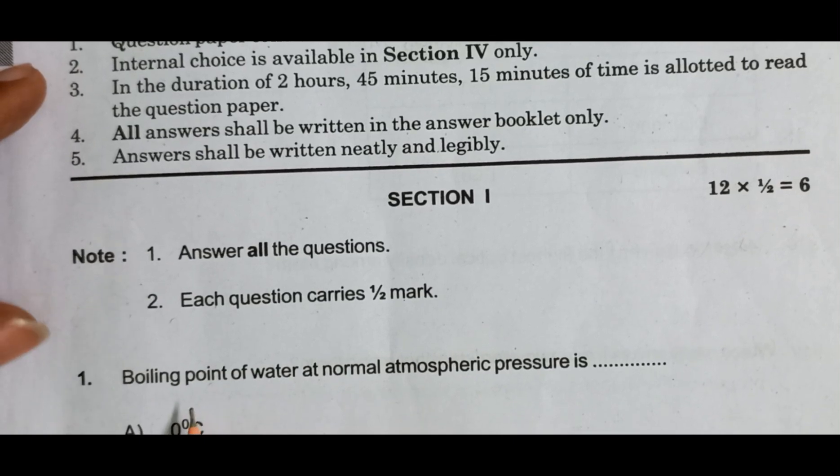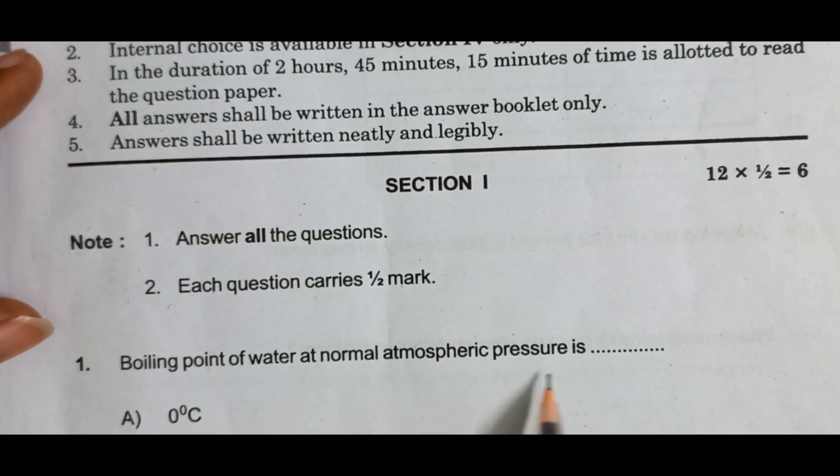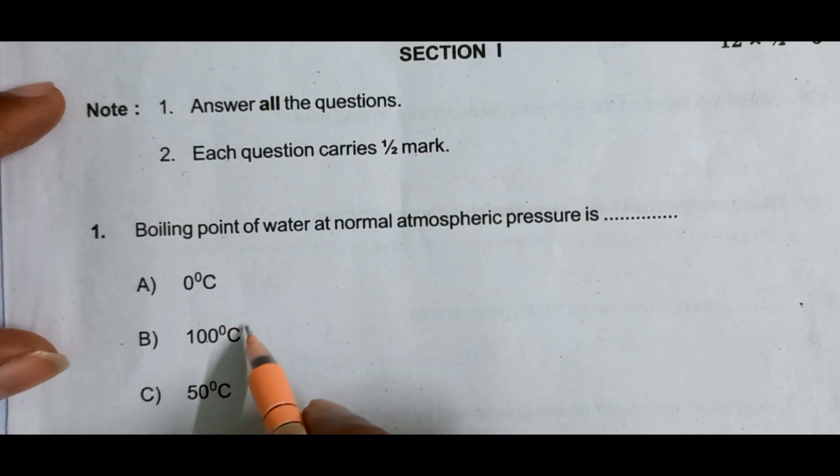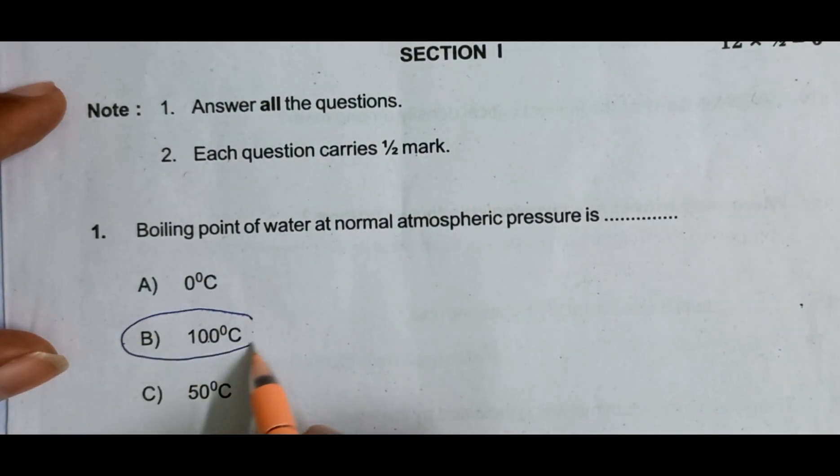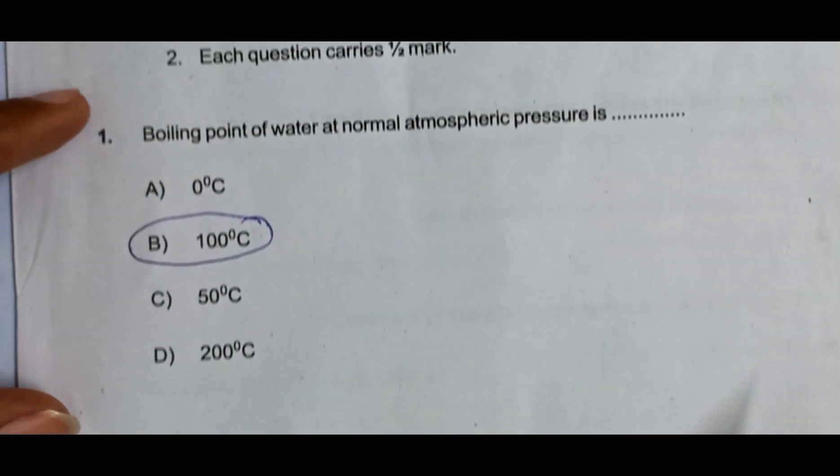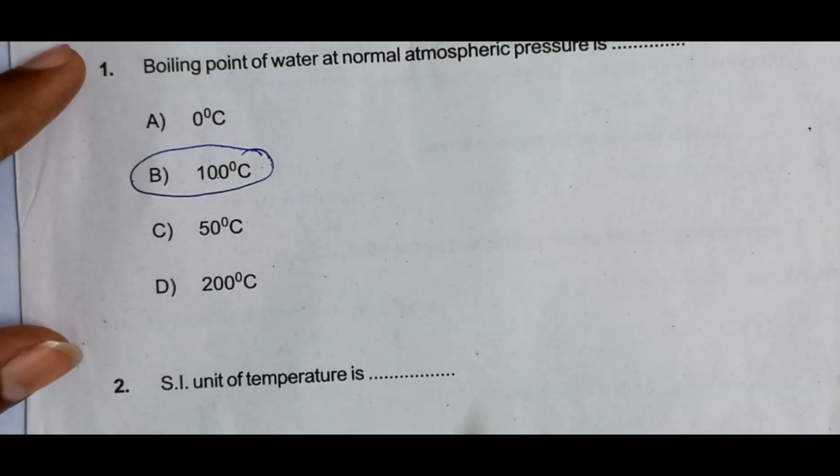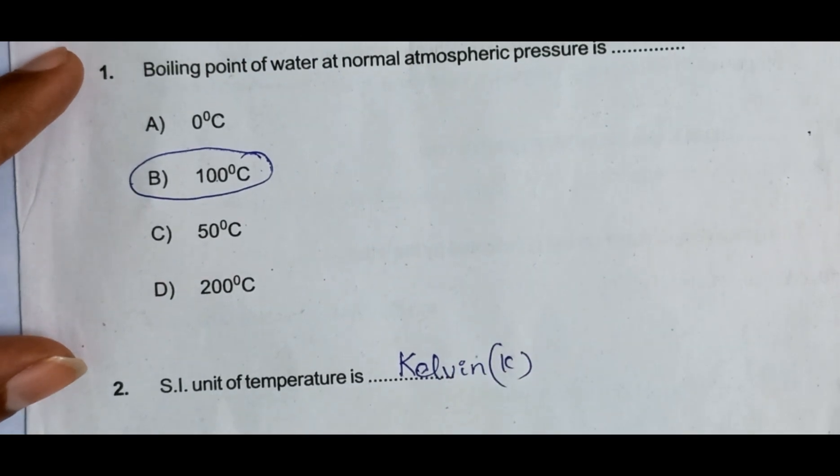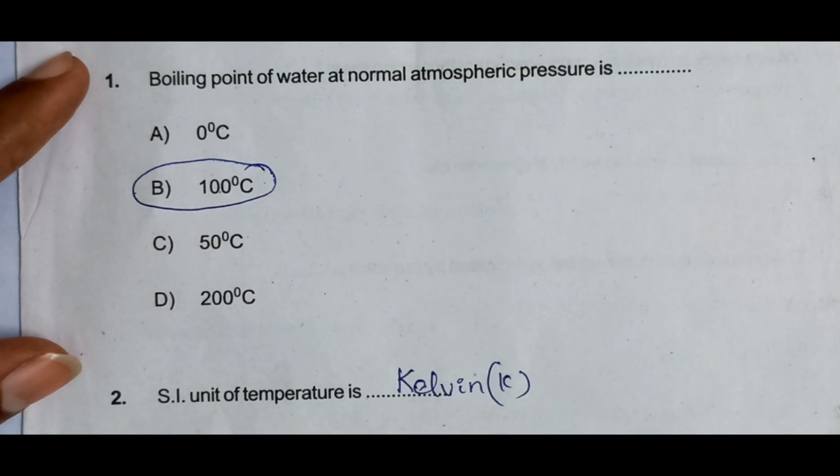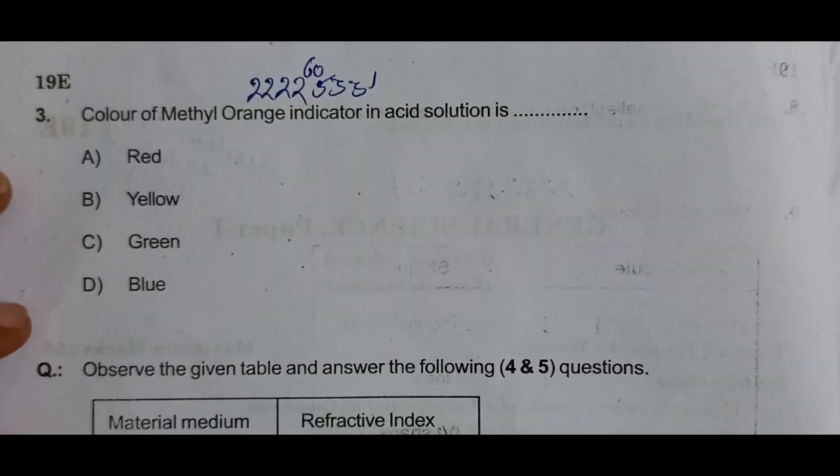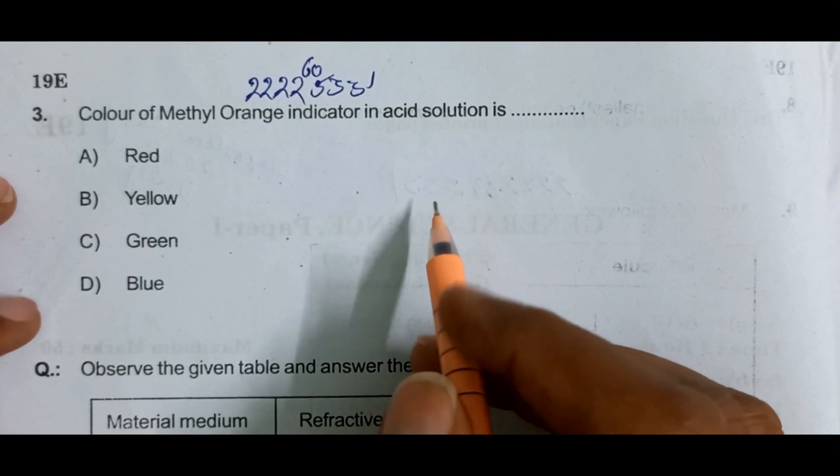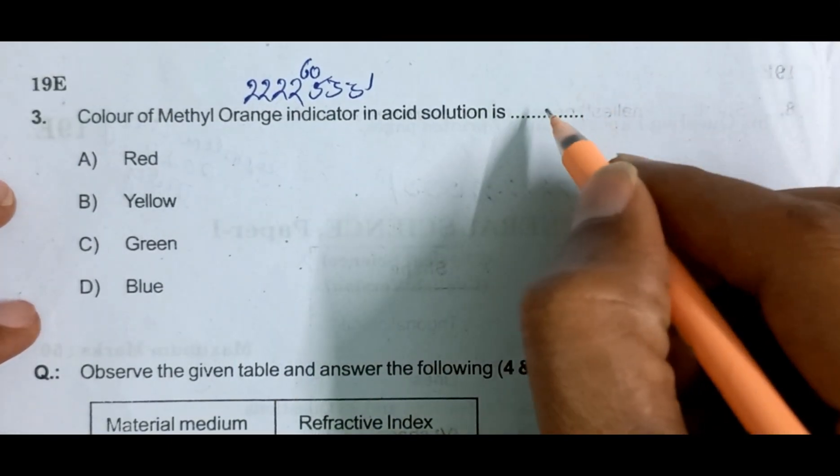Section one: boiling point of water at normal atmospheric pressure is 100 degrees Celsius. SI unit of temperature is Kelvin. Color of methyl orange indicator in acidic solution - red.